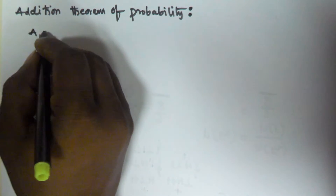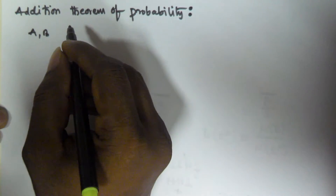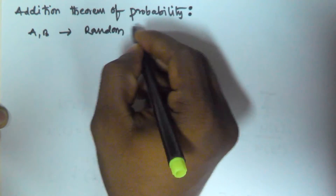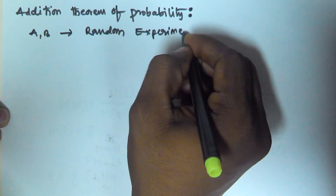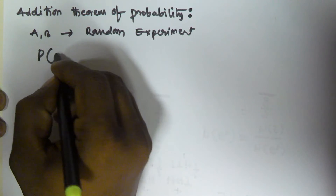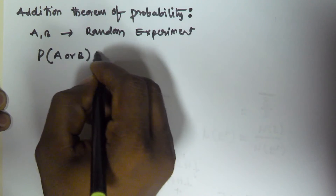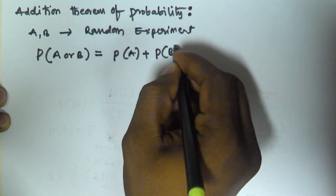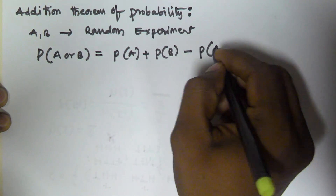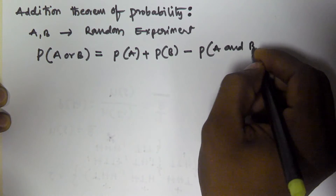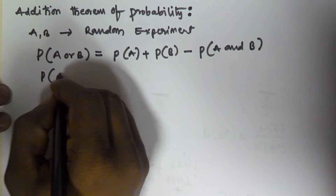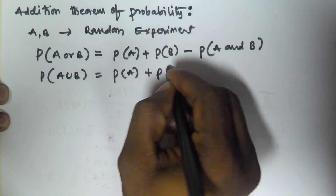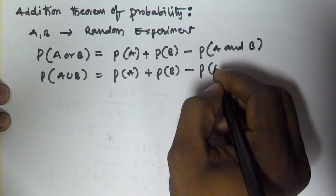Let us assume A and B are two events associated with a random experiment. Then the probability of occurring A or B is equal to the probability of occurring A plus probability of occurring B minus the probability of occurring A and B. The same can be represented as probability of A union B equal to probability of A plus probability of B minus probability of A intersection B.